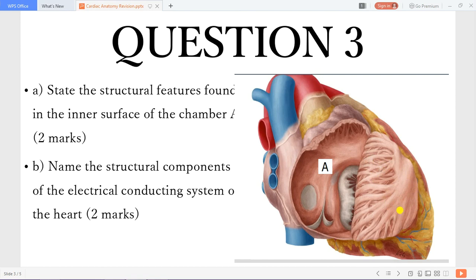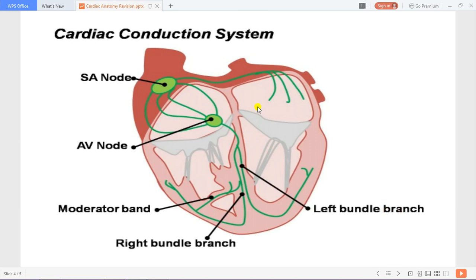The structural components of the electrical conducting system of the heart. You start from the sinoatrial node which is at the junction of the superior vena cava and the right atrium at the posterior medial aspect. Then you have the AV node which is found in the triangle of Koch.